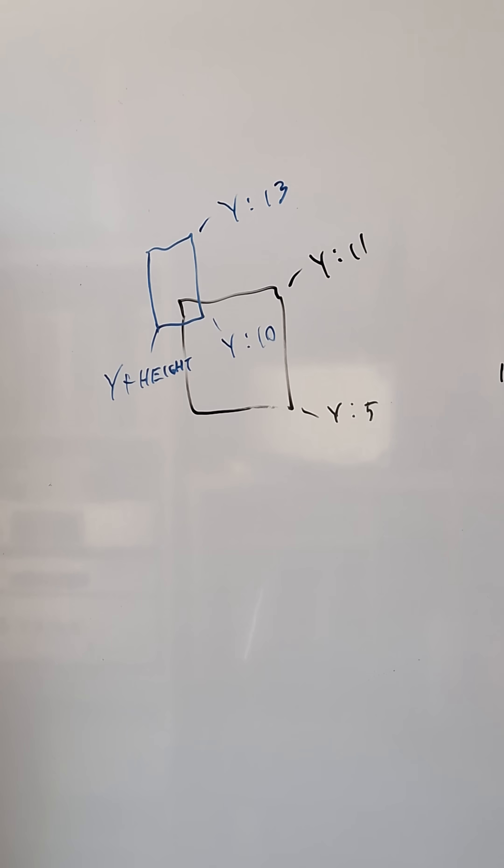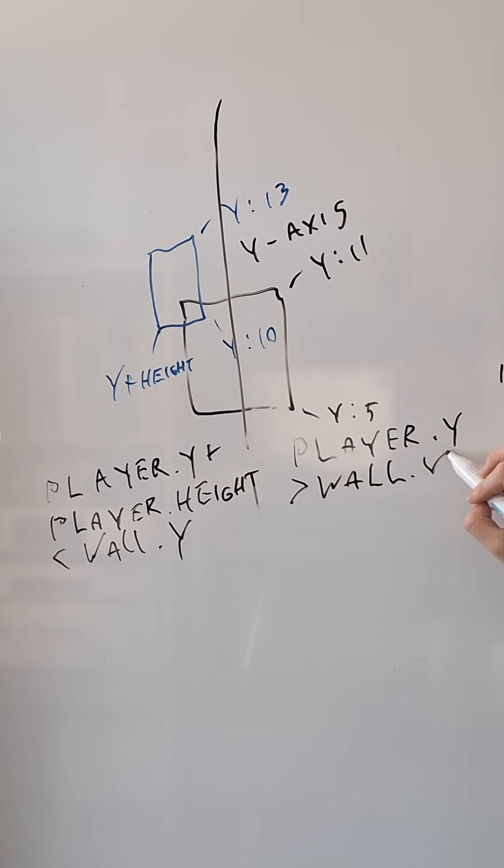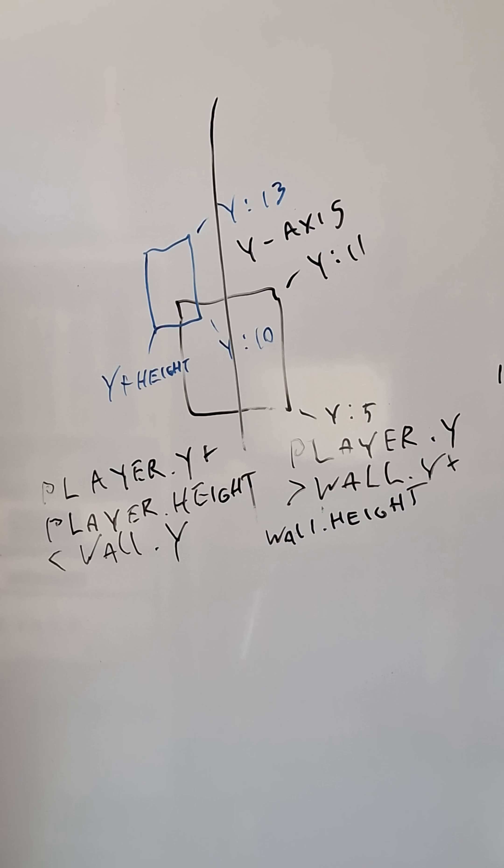If the bottom of the player is lower than the top of the wall, and the bottom of the wall is lower than the top of the player, we can say that they are overlapping on the y-axis.